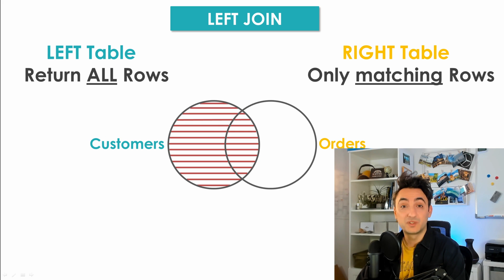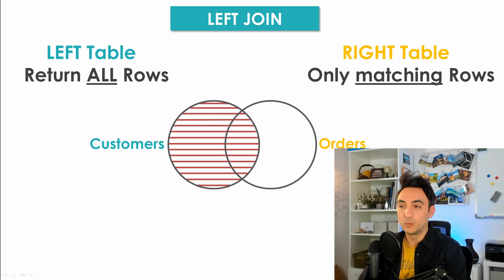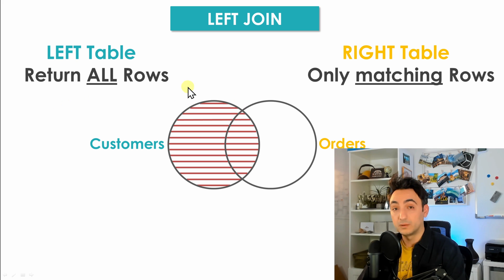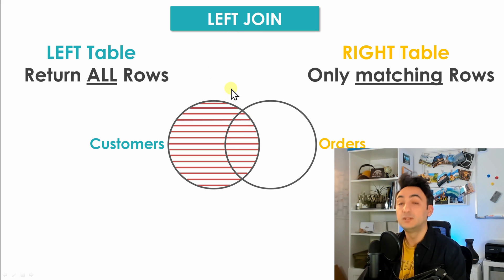The second type is the left join. As the name suggests, it depends on the left table more than the right. When you specify a left join in your SQL script, you are telling the database that you want all rows from the left table, and from the right table only the matching rows. So a left join gives you all records from the left and only the matching rows from the right.